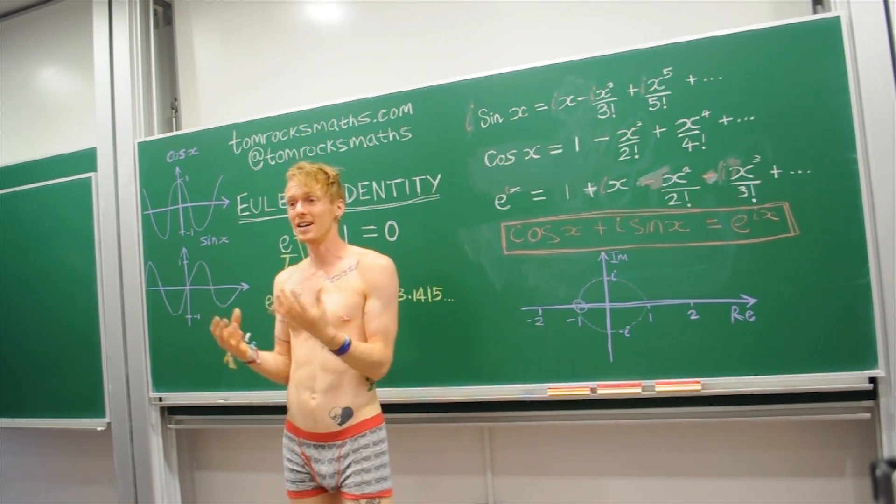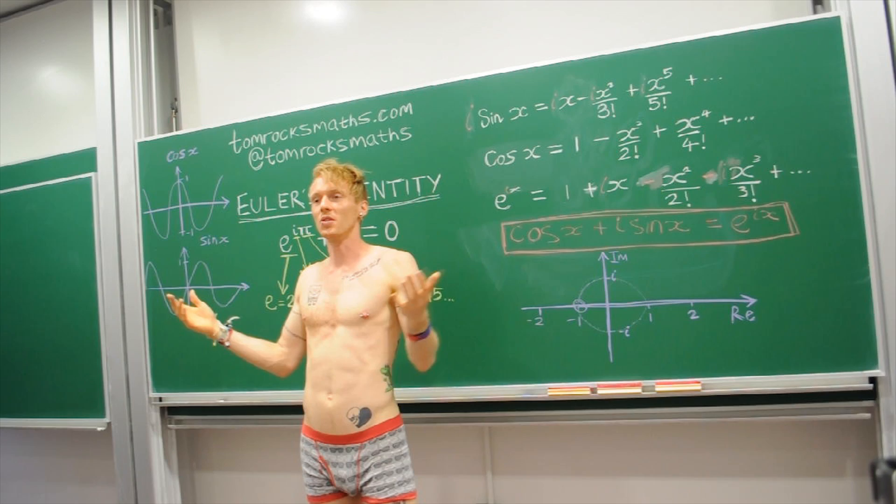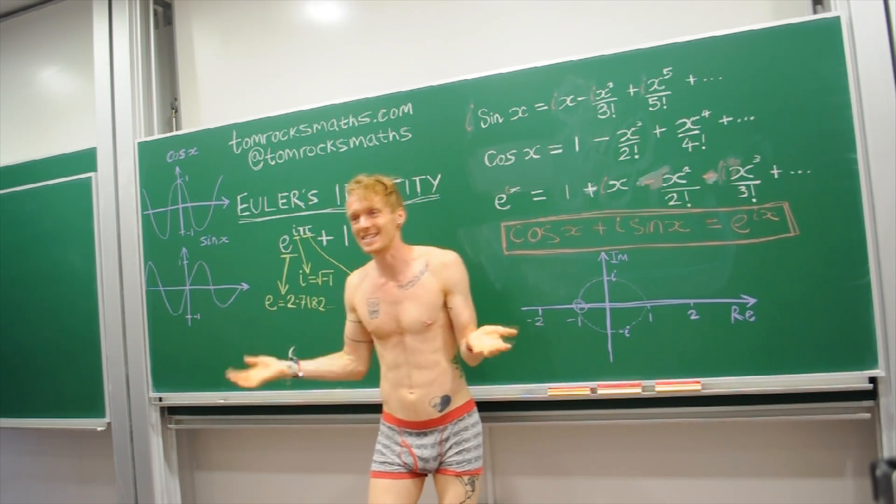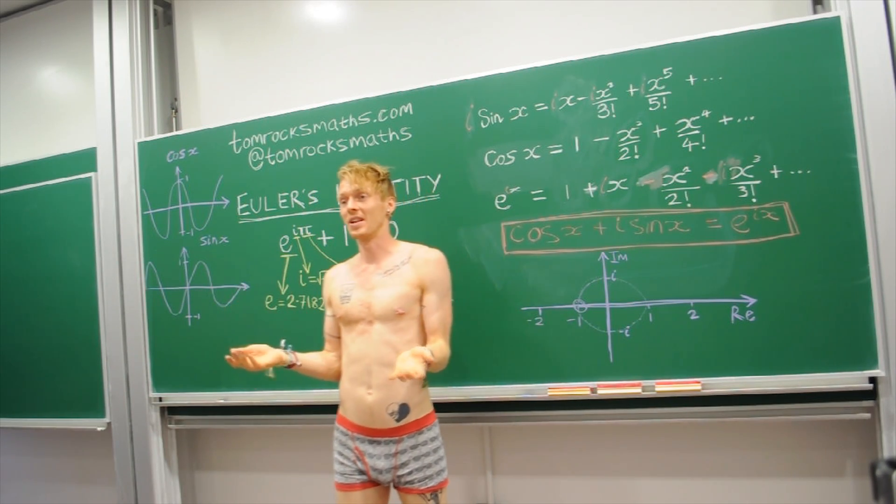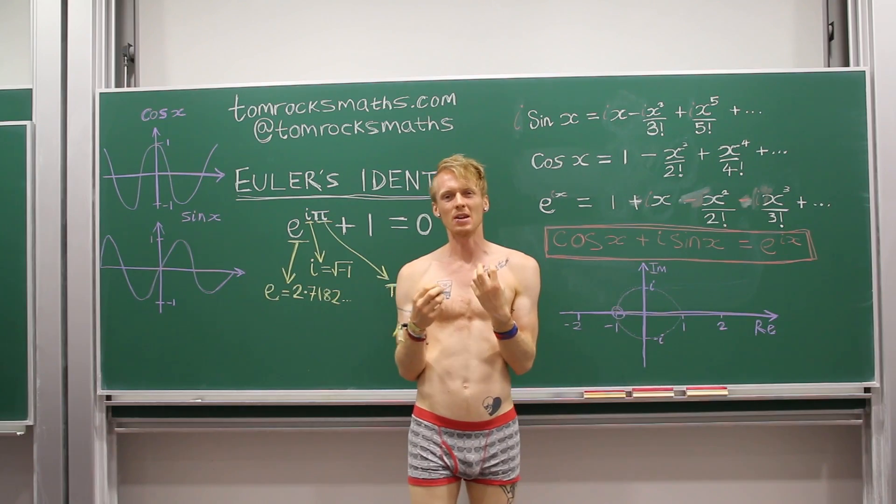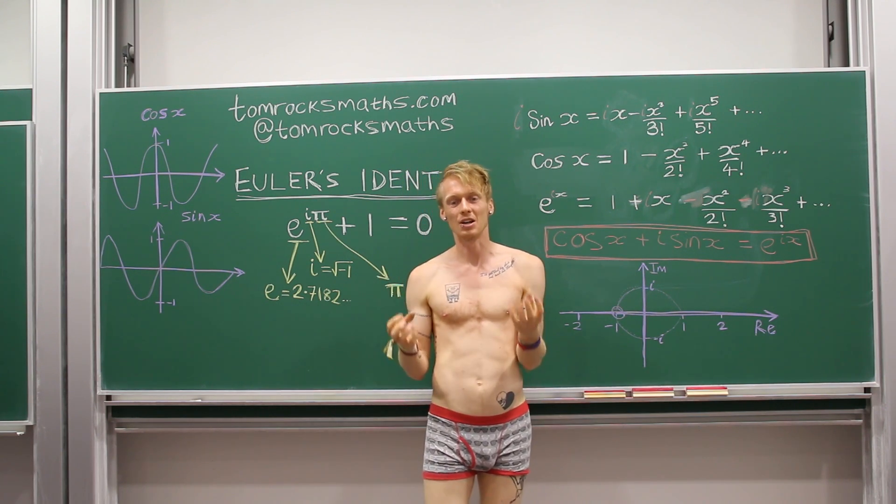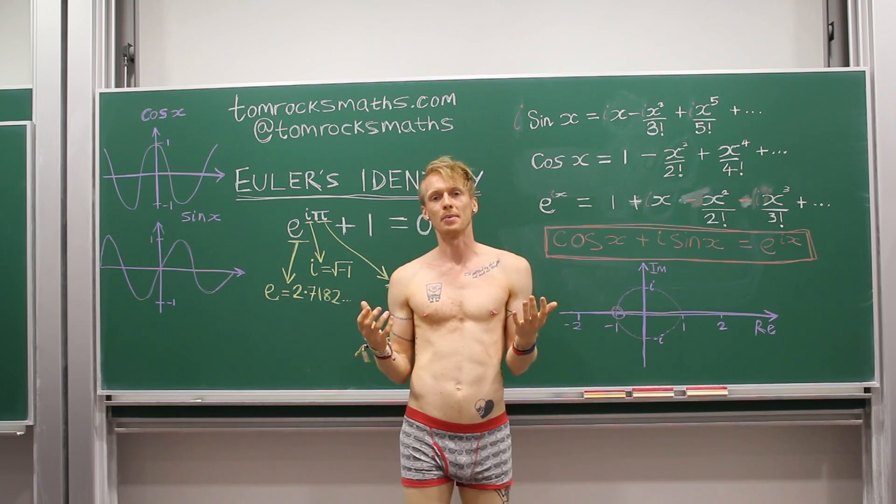So now, hopefully, next time you see Euler's identity, the most beautiful mathematical equation that exists, you will hopefully now understand just why it's so beautiful, and not just be in awe of its beauty, but also the complex mathematical ideas that underpin such a simple equation.